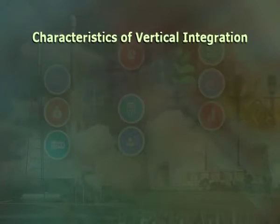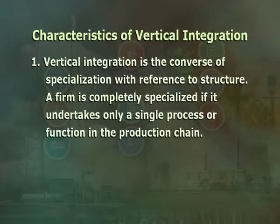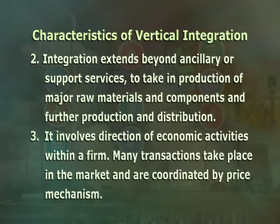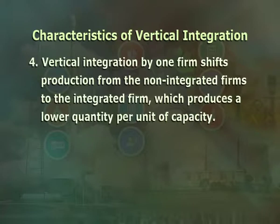Let us understand the characteristics of vertical integration. Number 1: vertical integration is the converse of specialization with reference to structure. A firm is completely specialized if it undertakes only a single process or function in the production chain. Number 2: integration extends beyond ancillary or support services to take in production of major raw materials and components and further production and distribution. Number 3: it involves direction of economic activities within a firm. Many transactions take place in the market and are coordinated by price mechanism; within a firm, however, the price mechanism is superseded by entrepreneurial control of economic activity. Number 4: vertical integration by one firm shifts production from non-integrated firms to the integrated firm, which produces a lower quantity per unit of capacity.